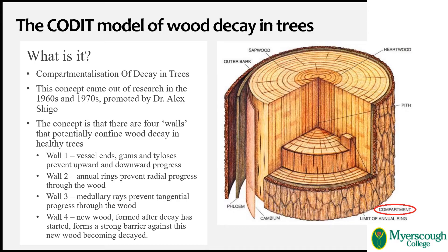Reaction zones can form in all orientations, so they can act as part of walls one, two, and three within this model — that's been integrated by authors in the 21st century. The effectiveness of reaction zones to prevent the spread of decay is moot, however, as several studies have found they're not effective barriers to wood decay fungi in many scenarios. Indeed, one piece of work like that was done at MIOSCO. The image on this slide shows a conifer stem and what the CODIT model considers to be a compartment surrounded by those analogous walls one, two, and three within the wood.